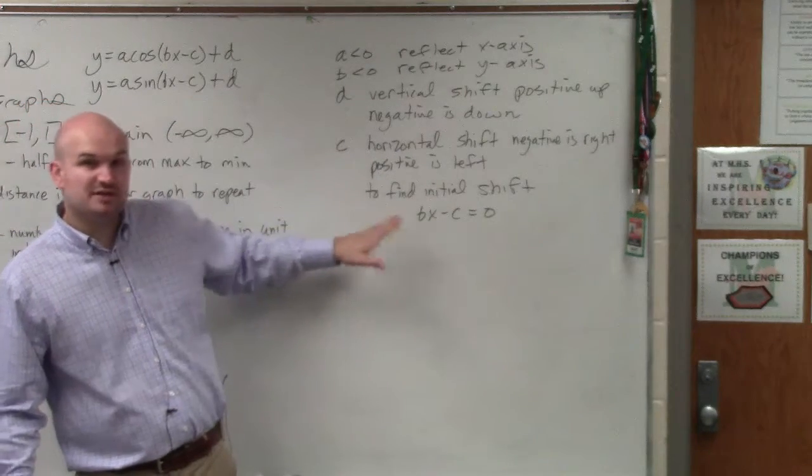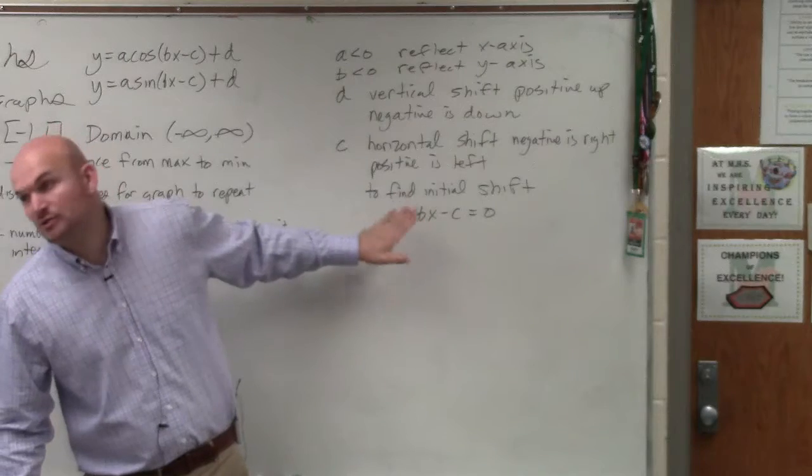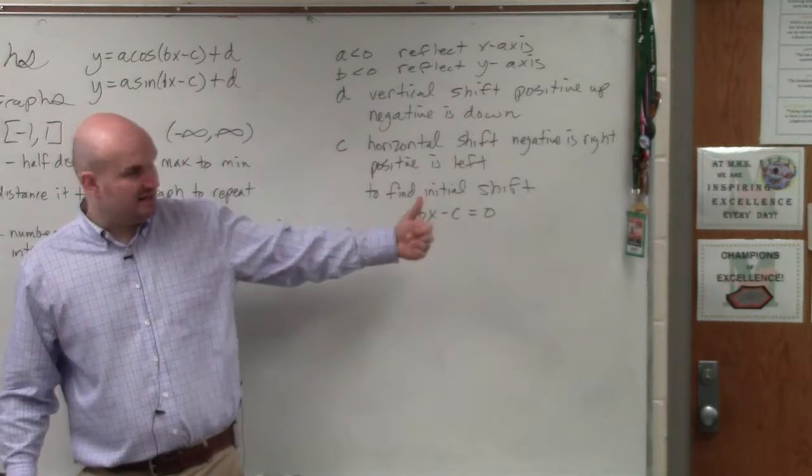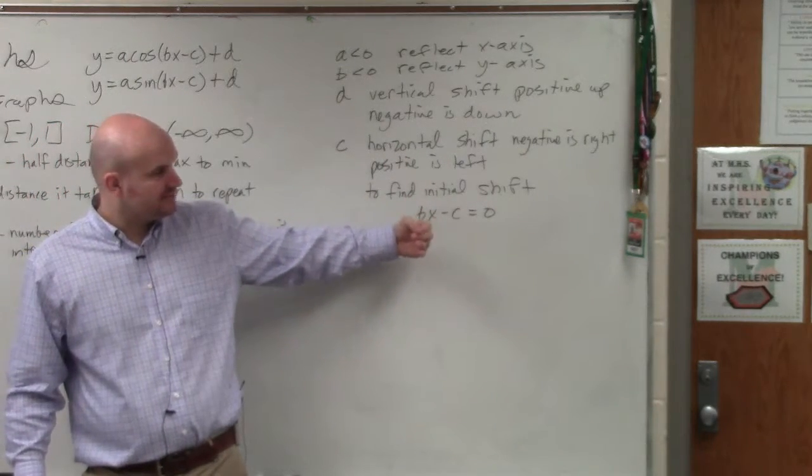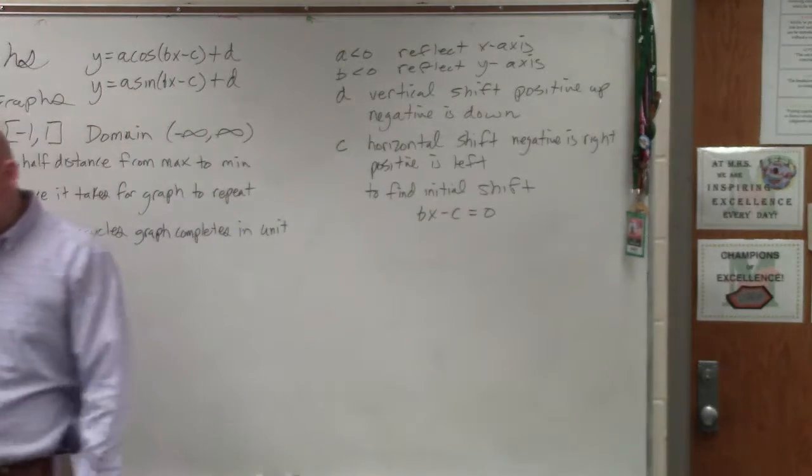So don't always just look at c, especially when there's a b. Remember, we have to include what b is. So you'd have to set it equal to 0. And we're going to do some examples. I'll talk about this later today. So remember those transformation functions.